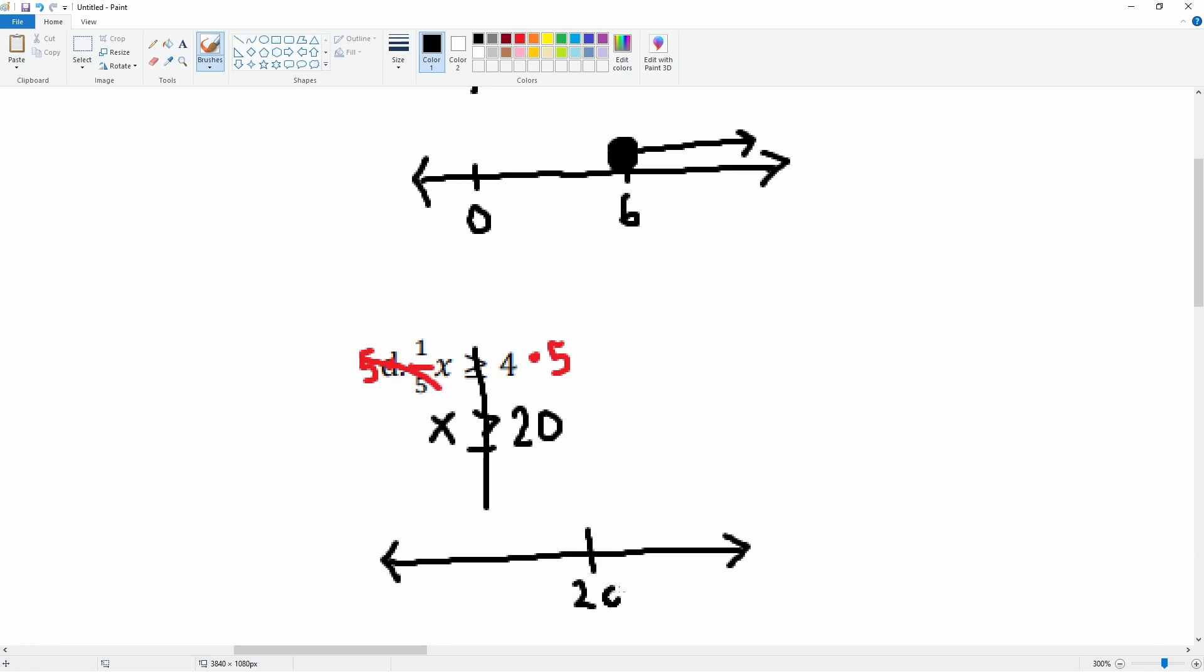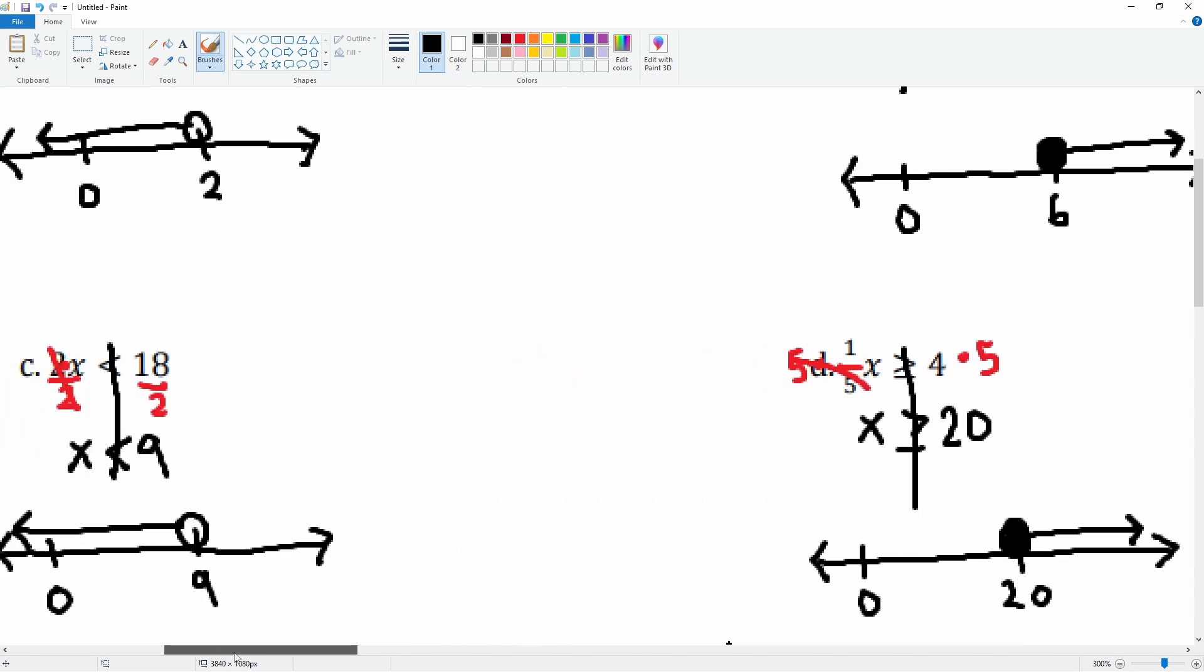Here's the number 20, here's the number 0 for reference. It is a closed circle on 20. X is greater than or equal to 20, so we go to the right. So there you go, that is how you solve these one-step inequalities and graph them as well.